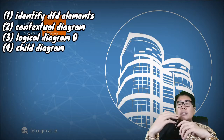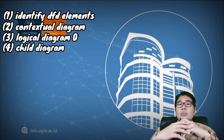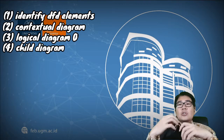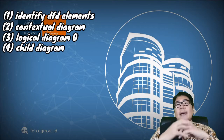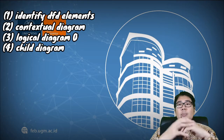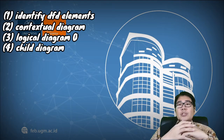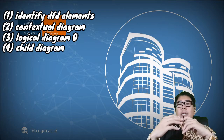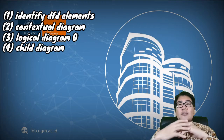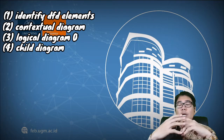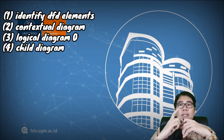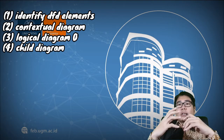Breaking down the business processes up to level one is usually sufficient to explain the detailed business process of a company. However, in a more complex company, you may need to further break down the business processes to level two or even level three.